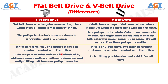Number 4: in flat belt drive, a wide range of velocity ratio can be obtained by utilizing stepped pulleys of different diameters and easily shifting the belt from one pulley to another, whereas such shifting provision does not exist in V-belt drive.